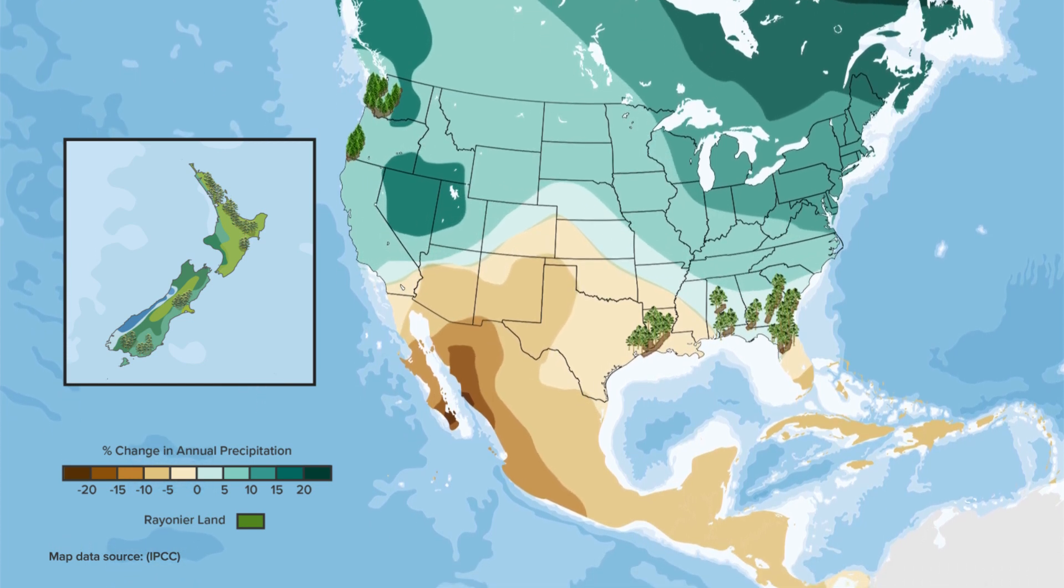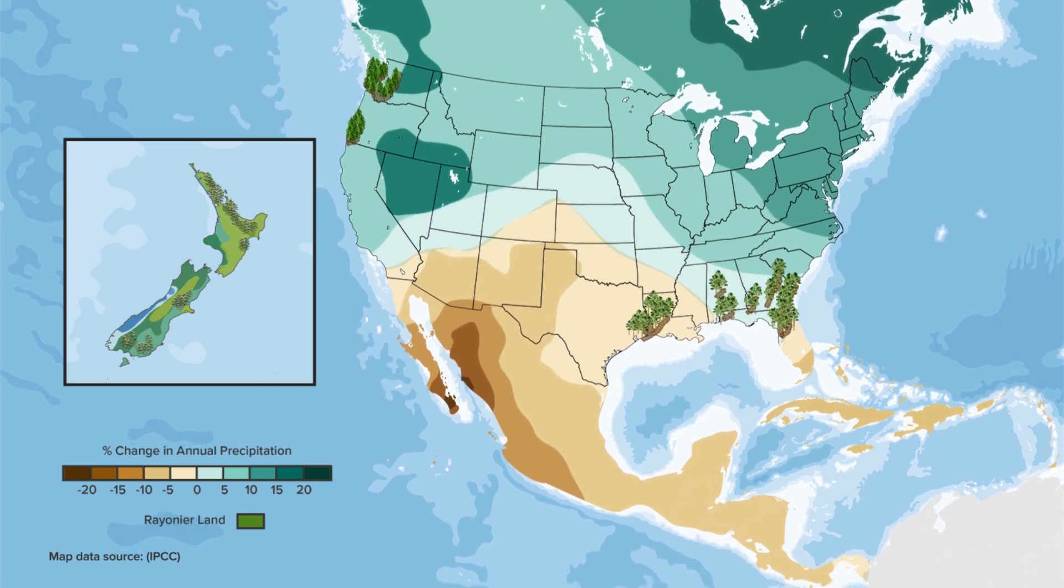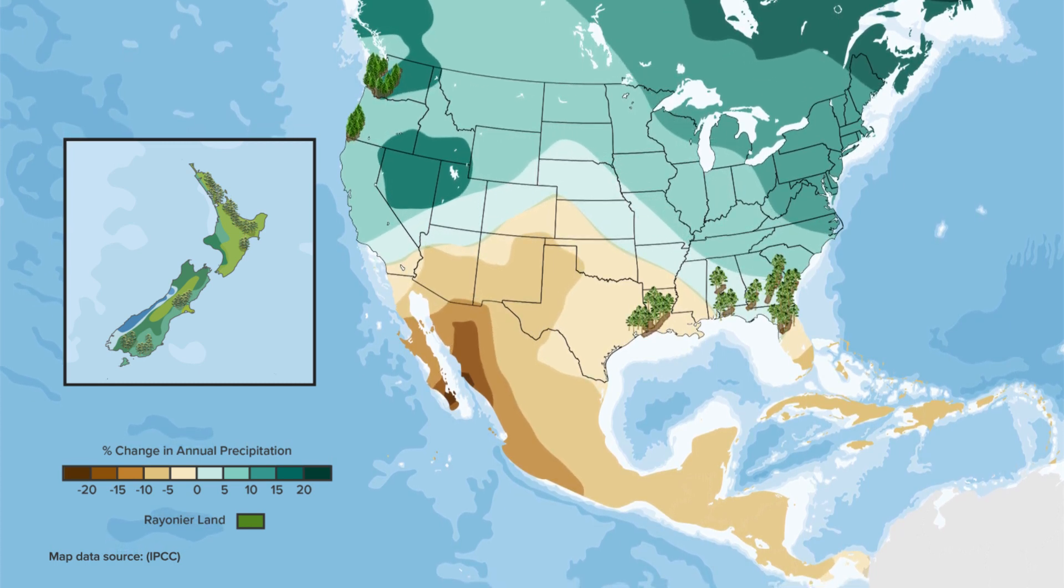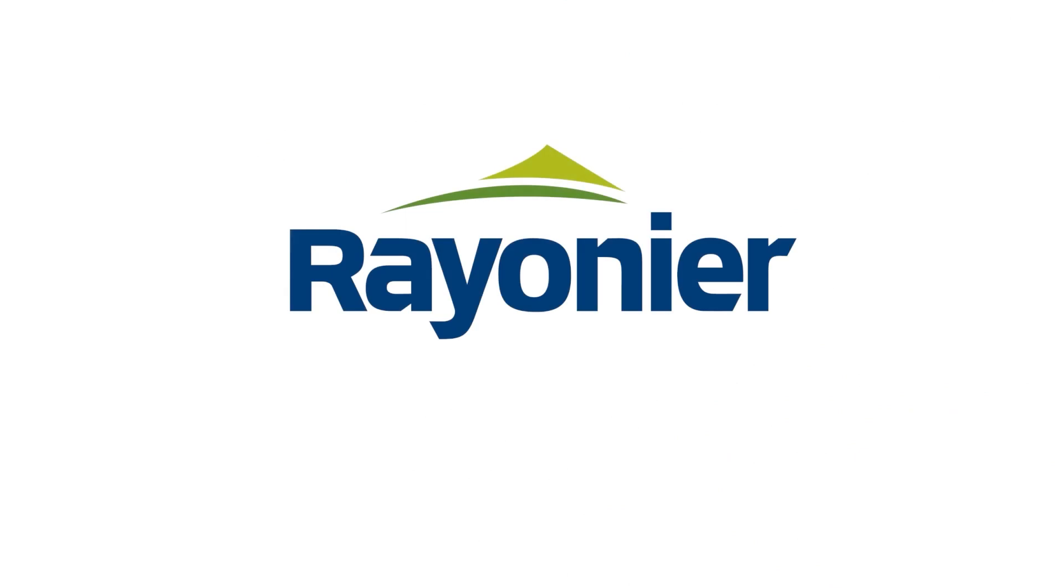Adopting climate-smart practices allows us to evolve our forest management even in a changing climate. You can learn more about Rainier's climate-smart forestry principles at rainier.com.